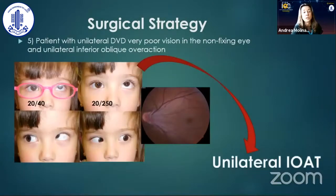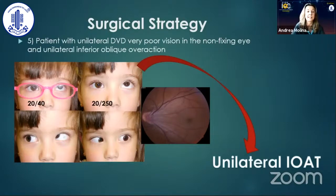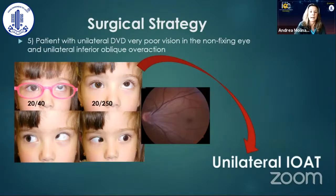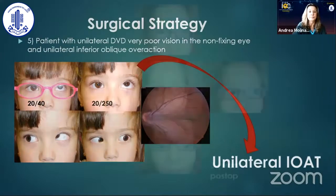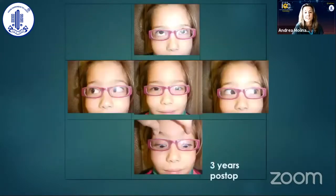Patients with unilateral DVD, very poor vision in the non-fixing eye, and unilateral inferior oblique overaction benefit from a unilateral inferior oblique anterior transposition — as in this girl who had foveal ectopia due to dragging of the optic disc to the macula due to prematurity — with stable results, as you can see, the same patient three years postoperatively.